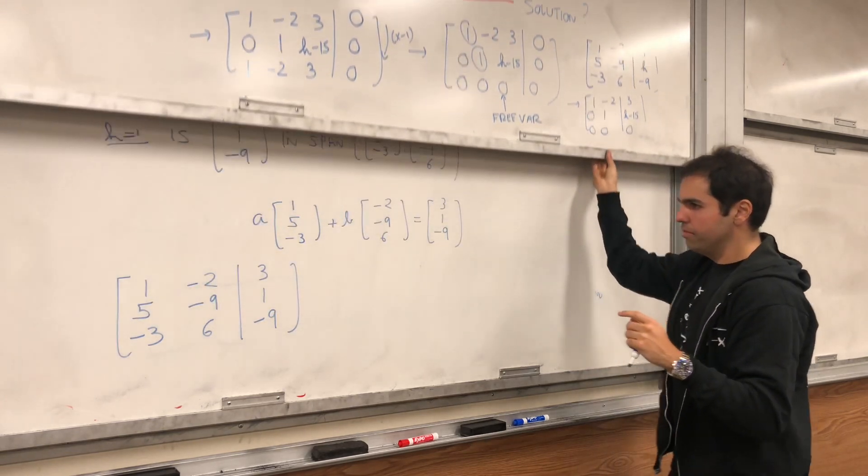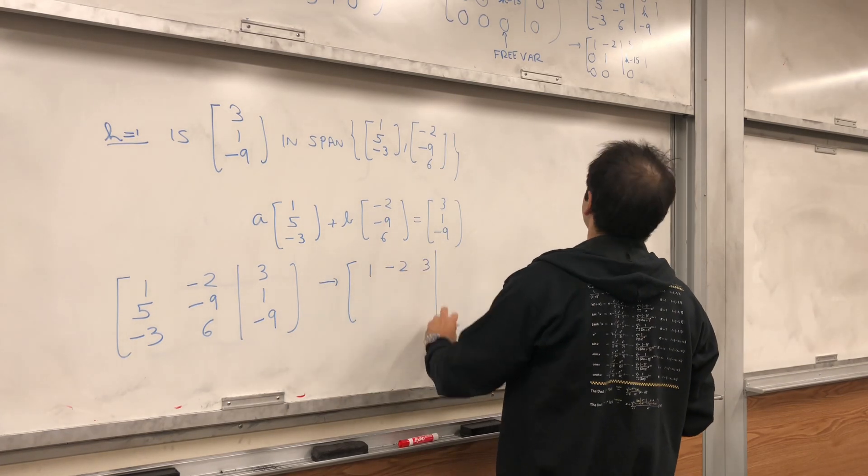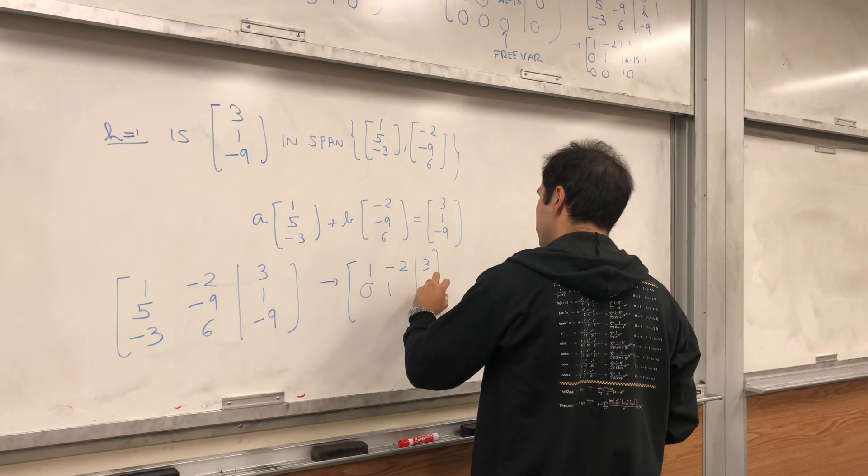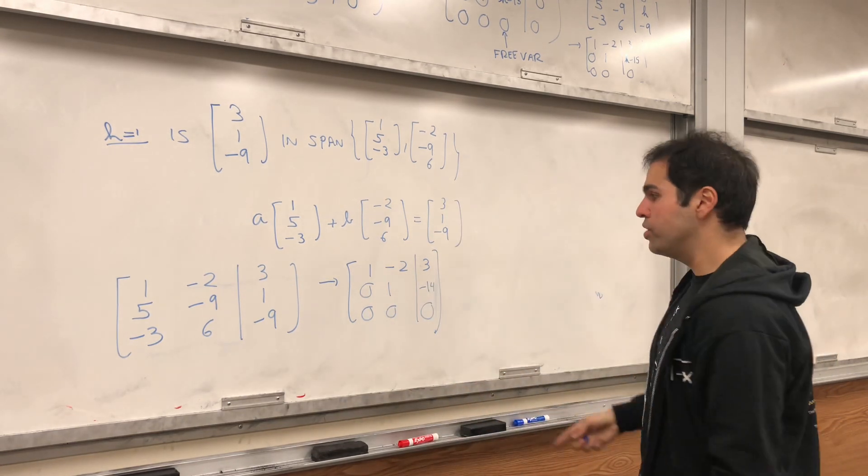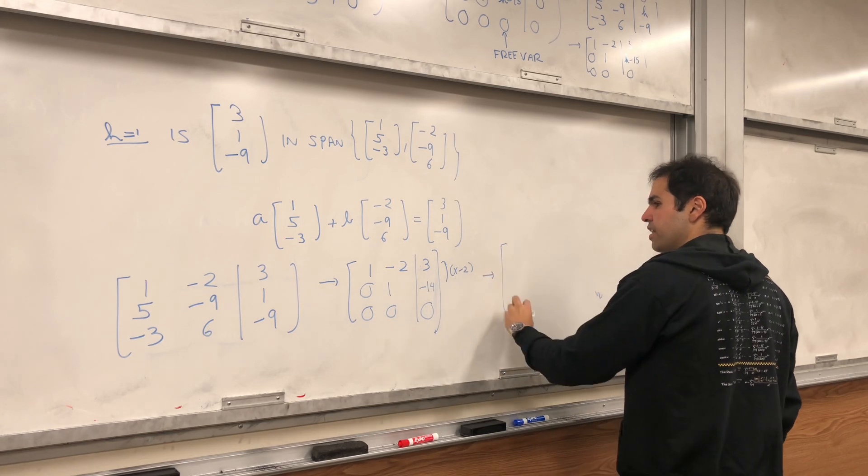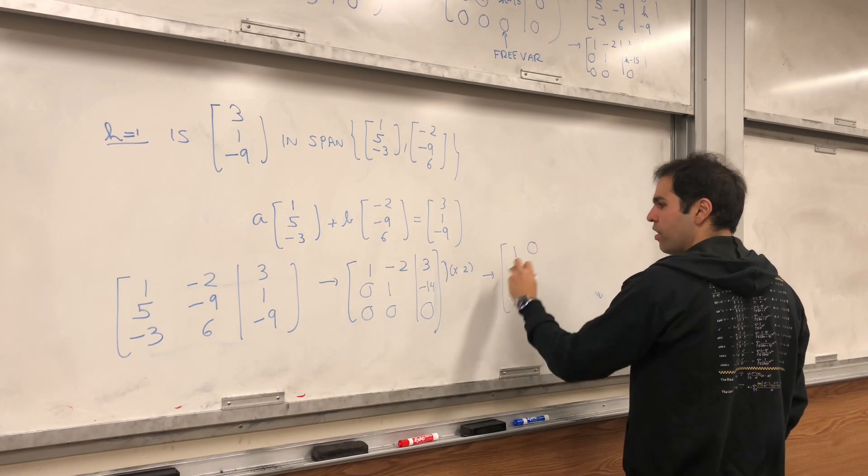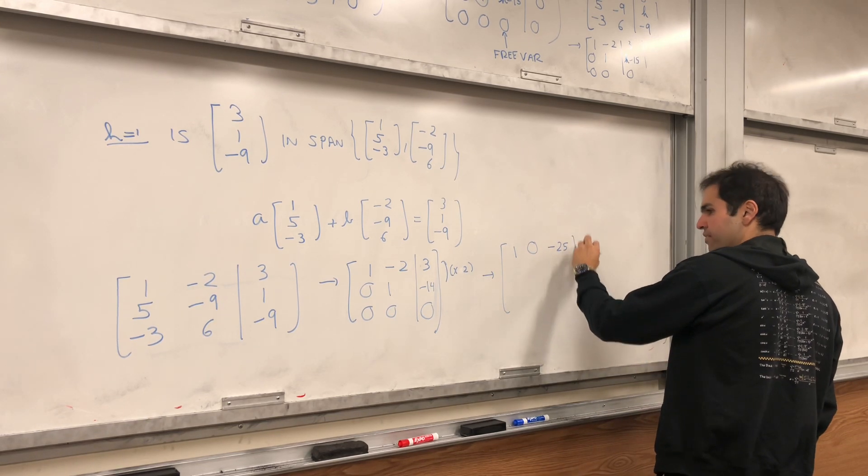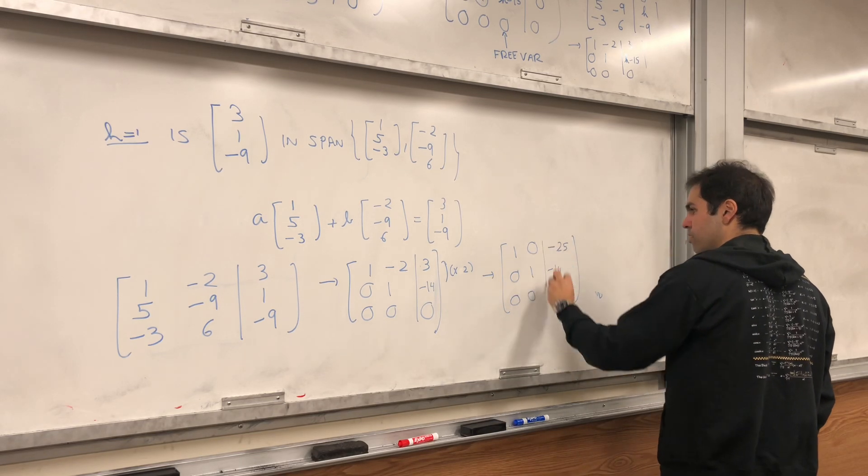This gives you 1, minus 2, 3; 0, 1, minus 14 because h is one; and let's continue. Let's reduce to row echelon form. Times two and it gives you 1, 0, and then minus 28 plus 3, that's minus 25. And then 0, 1, minus 14, and 0, 0, 0.